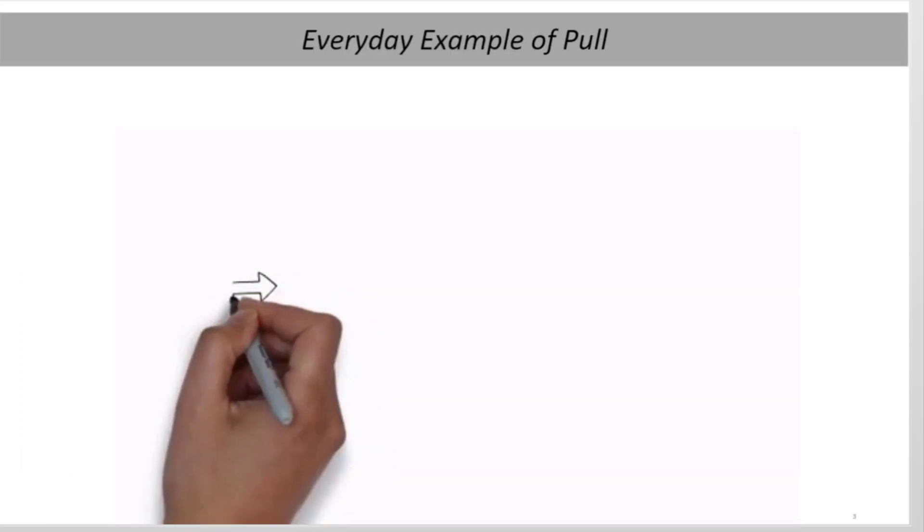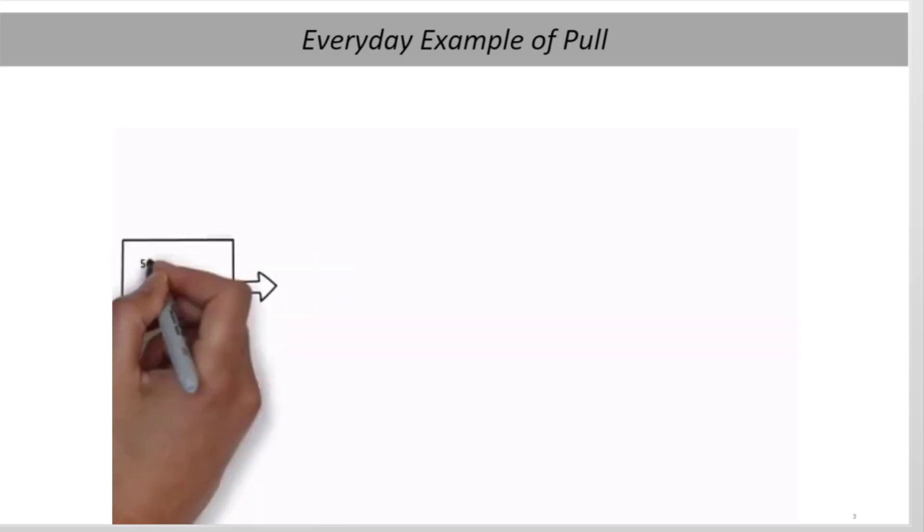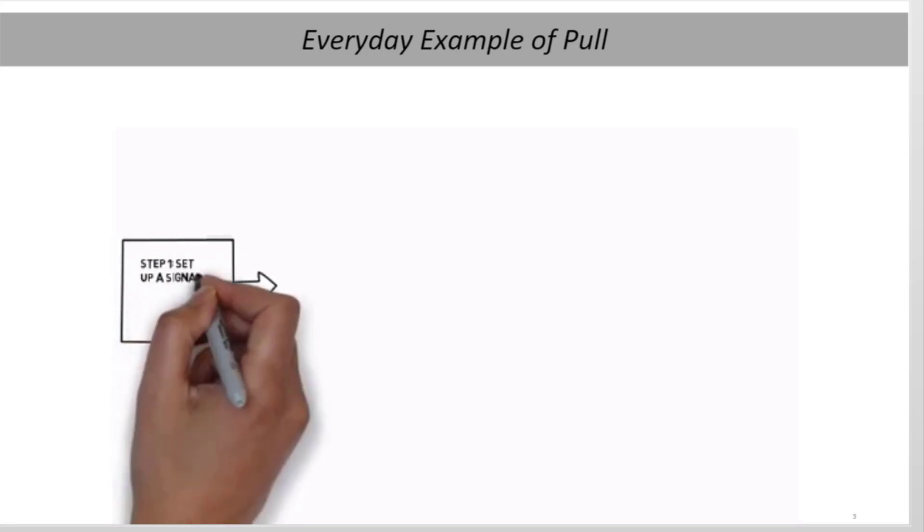Here's how sandwiches can be made with the pull method. You set up a signal, or limit, on the number of sandwiches that you will make ahead of time. Now, maybe this is a tray that only holds a certain number, and as it is emptied, you refill it.